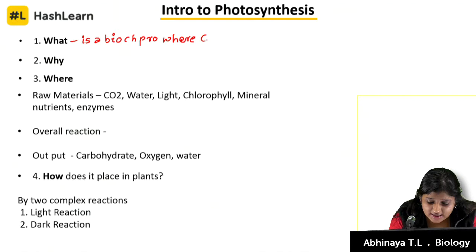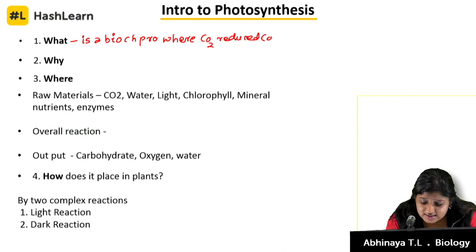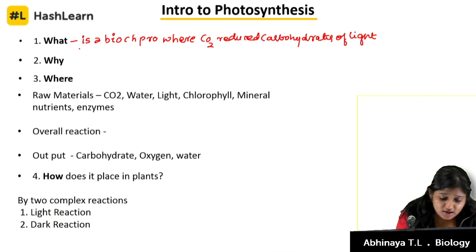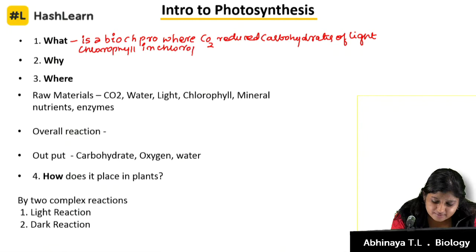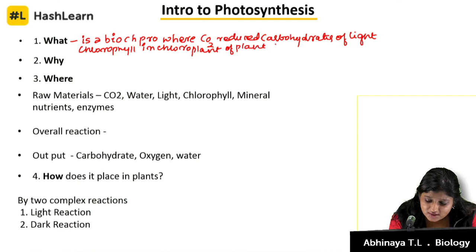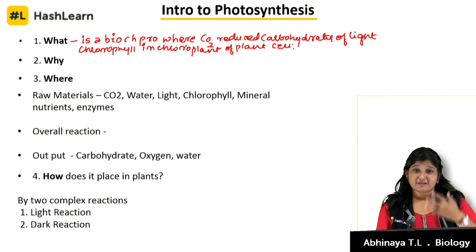This is the reaction in autotrophs — your plants — where carbohydrates are synthesized in the presence of light. Chlorophyll is the pigment which is going to help you out with your light-dependent reactions, in the chloroplast of a cell. This definition has to get stuck into your brain as we are going to thrive further in the concepts of this chapter. You should know what the definition of photosynthesis is.